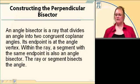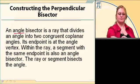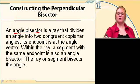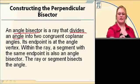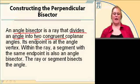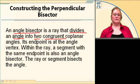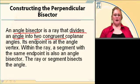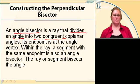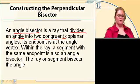Now let's look at an angle bisector. It's a ray that divides an angle into two congruent parts — two congruent angles. Its endpoint is at the angle vertex. And a segment with the same endpoint is also an angle bisector.